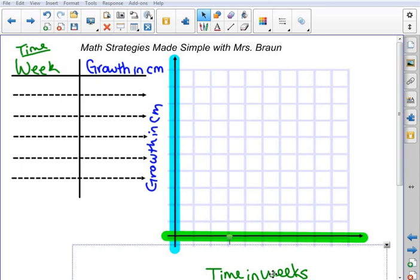Now I'm going to fill out the table with the data I collected from this experiment. When I first started, it was a seed, so I'm going to start at my origin of 0, 0.